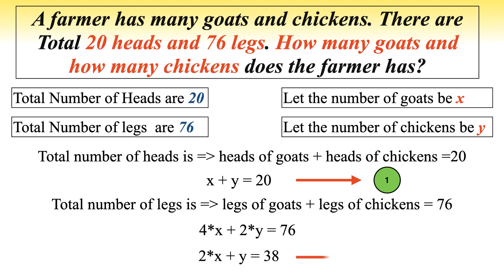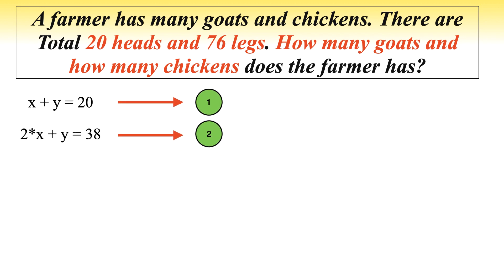After simplifying, the equation becomes 2x plus y equals 38, and call this equation 2. Now solve equations 1 and 2 to find the value of x and y.